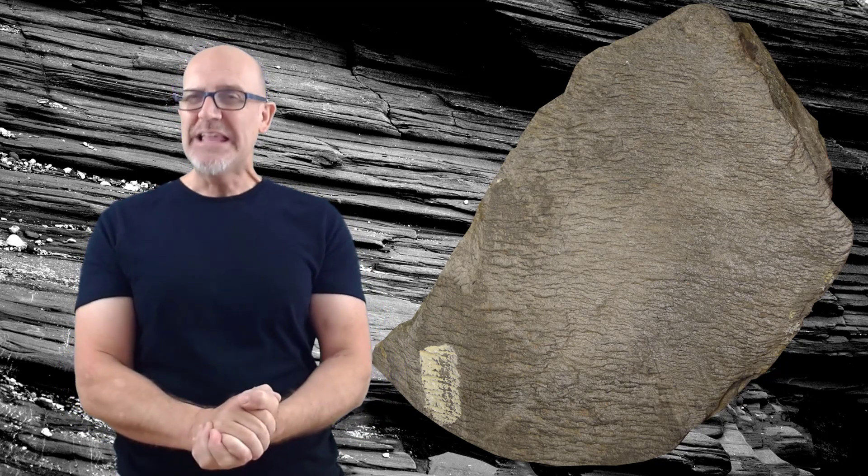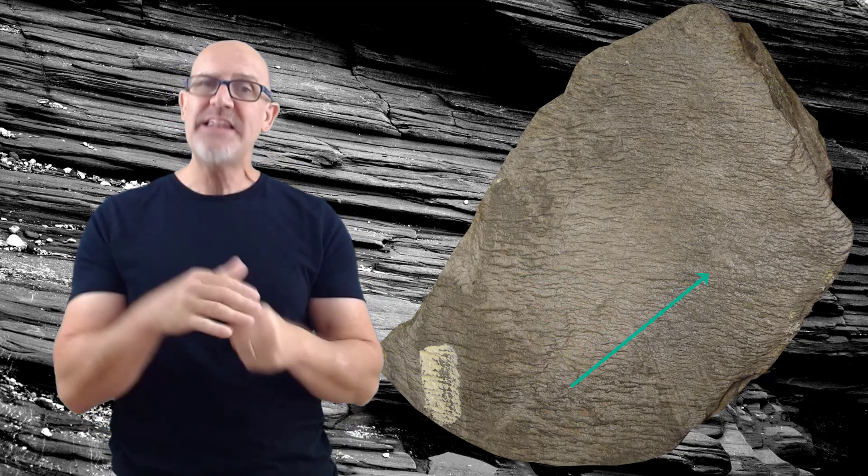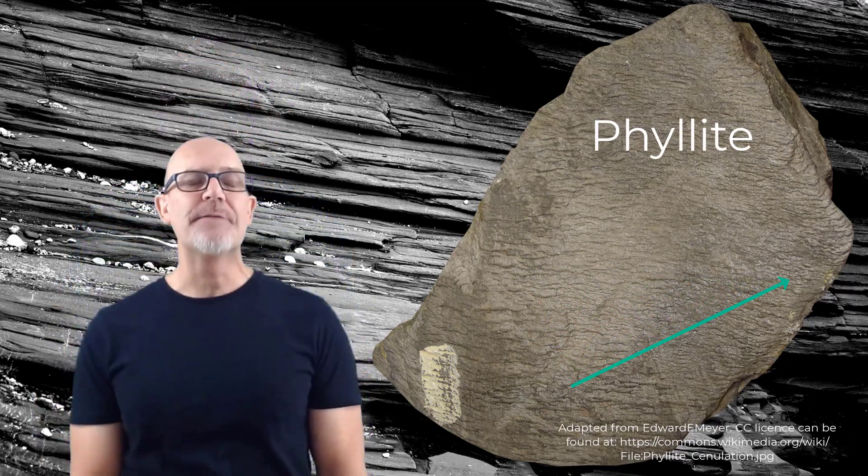As the slate continues to get buried deeper and deeper in the Earth, the differential stress and temperatures become even greater, and more and more of the original clay minerals will turn into minerals like biotite, chlorite, and muscovite. This gives the rock a slight satin sheen and causes those flat platey textures to crinkle just a little bit. At this point we call the rock a phyllite.